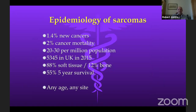Regarding epidemiology: sarcomas account for 1.4% of new cancers but 2% of cancer mortality. They occur in about 20 to 30 per million of the population, equating to about five and a half thousand a year in the UK, of which almost nine out of ten are soft tissue sarcomas. The five-year survival is about 55% across the board. The key message is you can get them at pretty much any age and any site in the body.